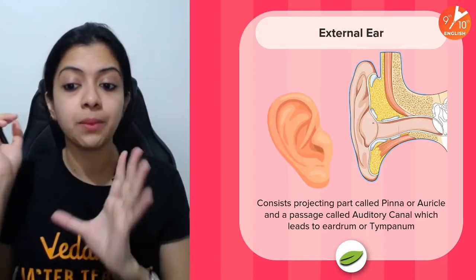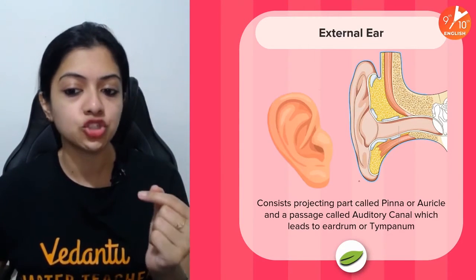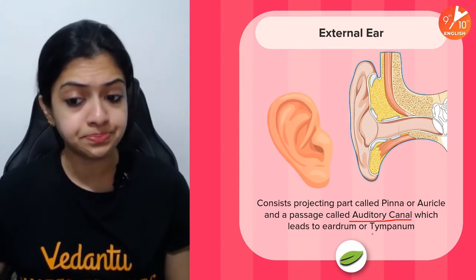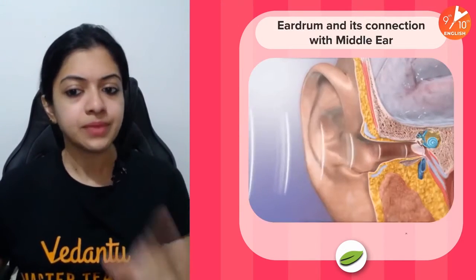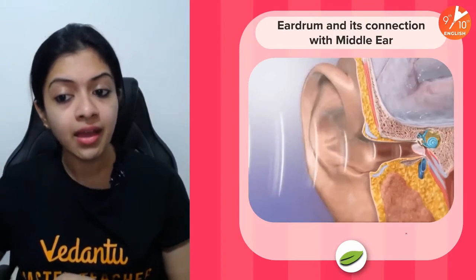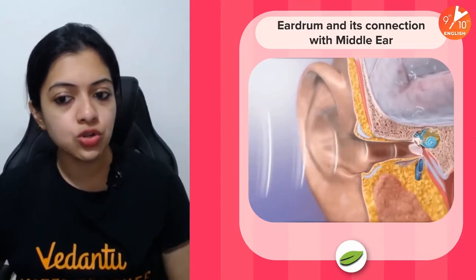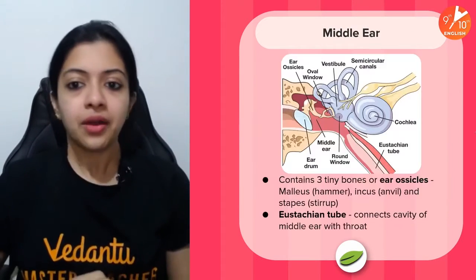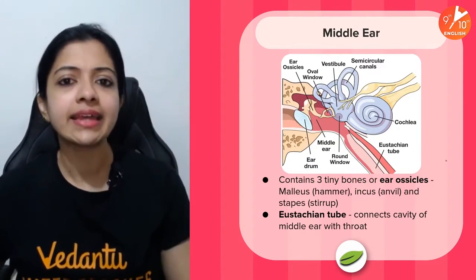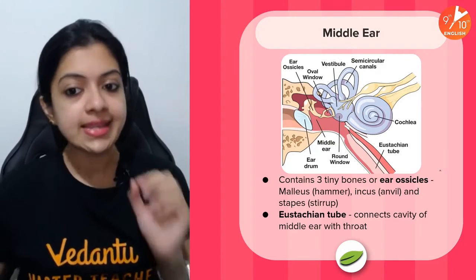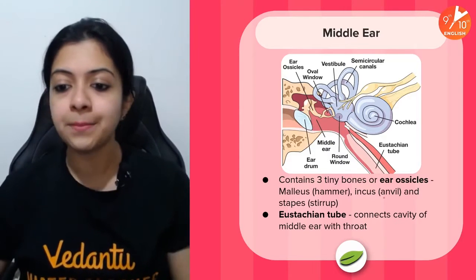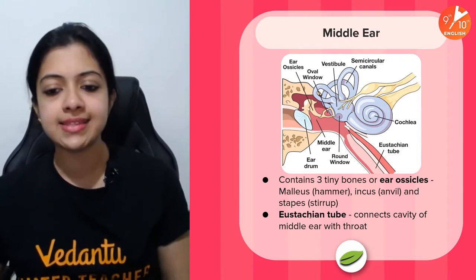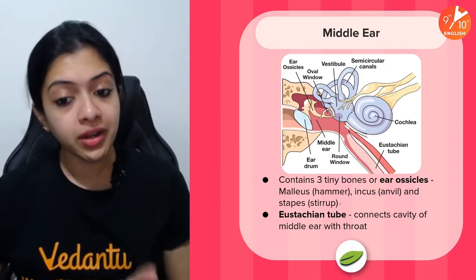The external ear consists of the projecting part called the pinna or auricle, which leads into the auditory canal or ear canal. This leads to the eardrum, also called the tympanum, which separates the external ear from the middle ear. When sound waves are received by the external ear, they pass inside and ultimately vibrate the eardrum. The middle ear consists of three tiny bones — the smallest in the body — also called ear ossicles. According to their shape, they are nicknamed hammer, anvil, and stirrup respectively. Apart from this, there is the eustachian tube, which connects the cavity of the middle ear with the throat.